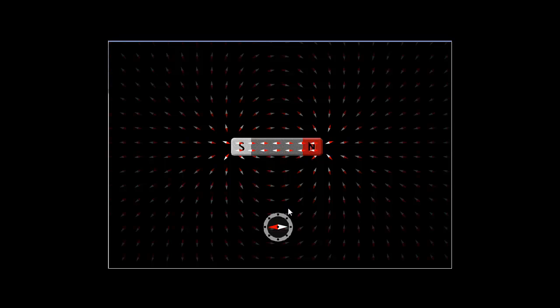This is a demonstration of a magnetic field and how a compass behaves around it. So this down here is a compass. The red thing is the north end of the compass and the white thing is the south end of the compass.